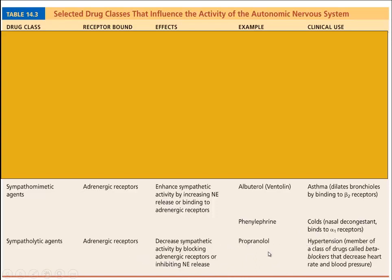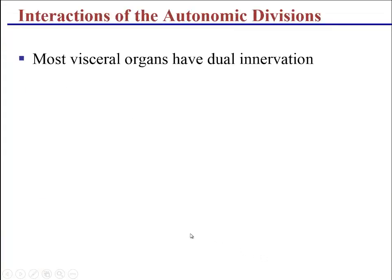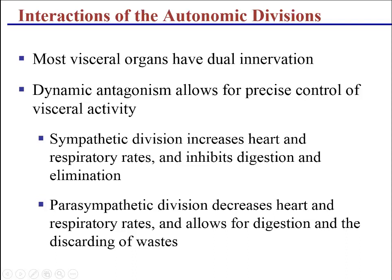Most of our organs are dual innervated, so we can see both inhibitory and excitatory responses from both the parasympathetic and sympathetic system. The sympathetic system causes heart rate to go up, breathing rate to go up, and inhibits the gut and urinary system. The parasympathetic side slows down the heart rate, slows down breathing rate, and allows us to digest and defecate.